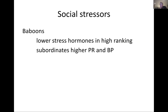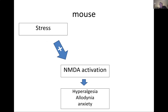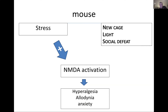Social stressors invoke physiological effects. You can use social stressors — altering a rat's cage litter and light, forcing them to swim — which releases endogenous steroids giving acute analgesia and longer-term hyperalgesia. Stress drives NMDA activation. You can induce this with simple things like a new cage, a light preventing sleep, or social defeat — put a big rat in the cage of a small rat, and that small rat will exhibit NMDA activation.